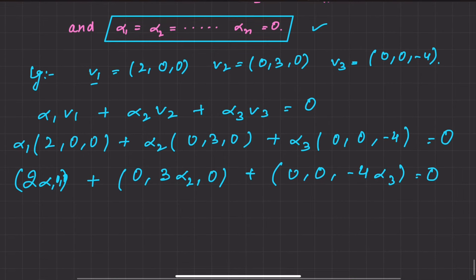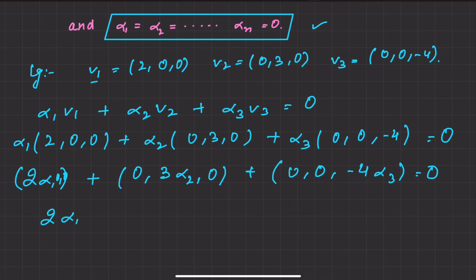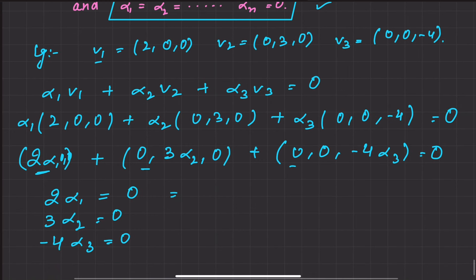If we take all of this, 2 alpha1 is equal to 0, 3 alpha2 will be equal to 0, and minus 4 alpha3 will be equal to 0. This implies alpha1 is 0, alpha2 will be 0, and alpha3 will be 0.